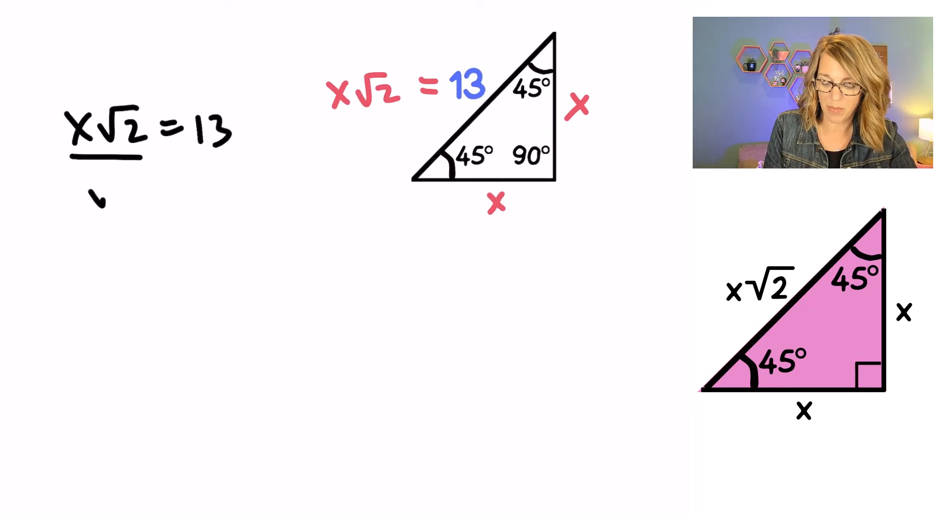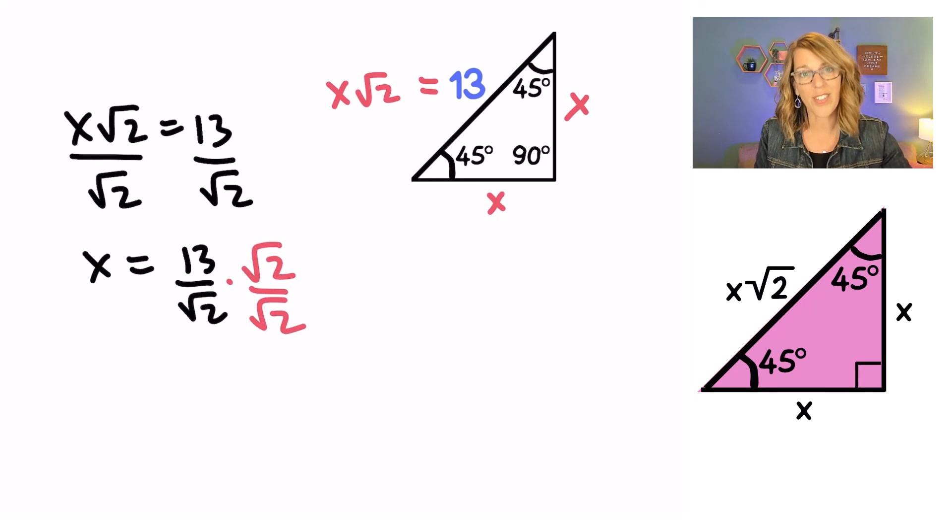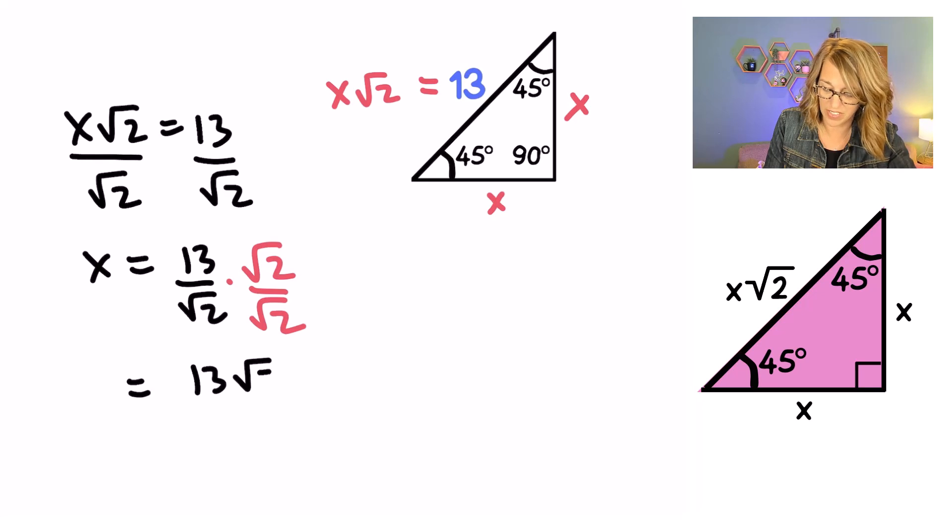I'm going to divide both sides by radical 2. I'm solving for that X. X is equal to 13 over radical 2. But you probably are going to need to rationalize this to simplify it. I'm going to multiply by a radical 2, so I no longer have a radical in my denominator. As I do this, I end up with a 13 radical 2 in the numerator, nothing to do there. And in my denominator, I've got the square root of 2 times 2, which is the square root of 4.